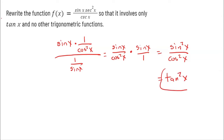And what do you know — that's going to be tangent squared of x. I was able to rewrite the function so that it only involves tangent. Tangent squared of x is just a different representation of this original, quite ugly, trigonometric function.